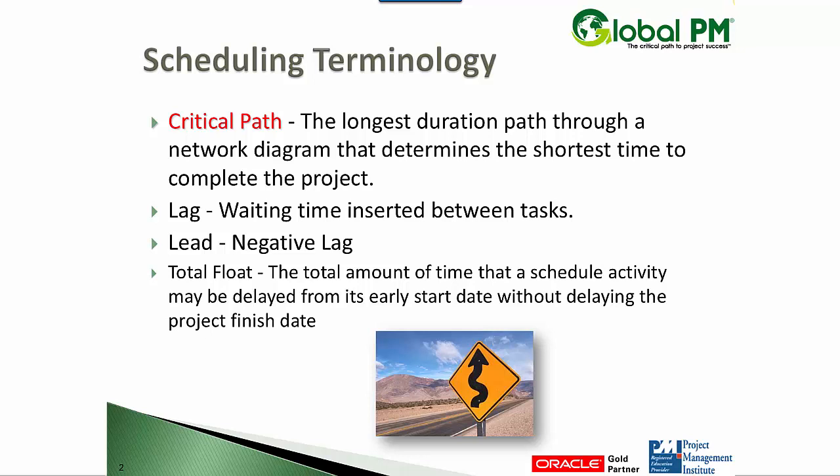That's critical path. Lag: this is a directed delay in the start or finish of a succeeding activity. For example, if you pour slab, you may insert a five day lag for cure time. That's one way of reflecting that delay in the schedule. Some people might also have a separate activity for cure time.